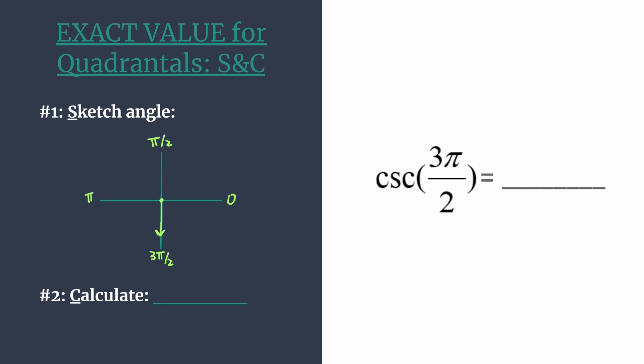Remember, we're working on the unit circle, so here's the origin. We can quickly find the corresponding coordinates because we know the radius of the unit circle is 1. Moving down from the origin 1 unit, these coordinates must be (0, negative 1).